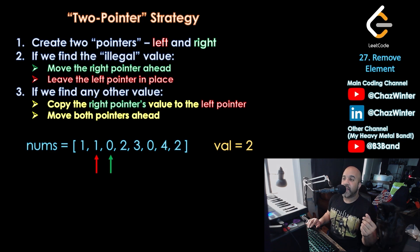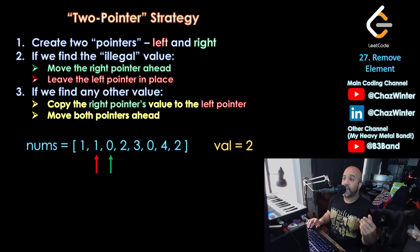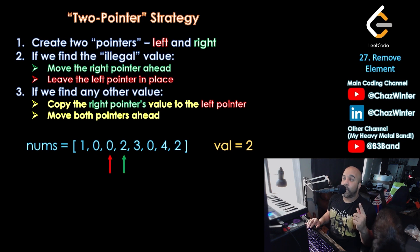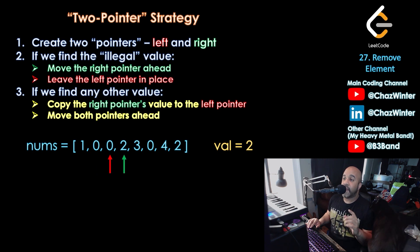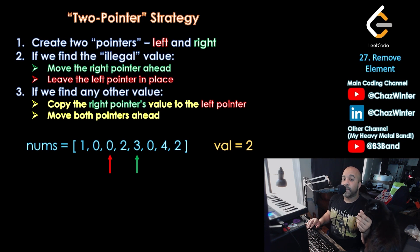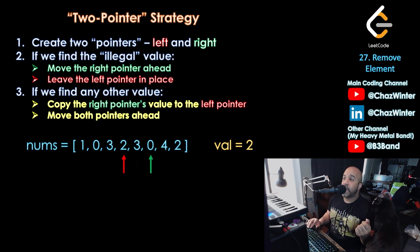Let's continue the algorithm. The right pointer is currently looking at a 0 — 0 is not 2, so we copy the right pointer's value to the left pointer, then move both pointers. Now the right pointer sees a 2 — that's the illegal value — so we move the right pointer ahead and leave the left pointer in place.